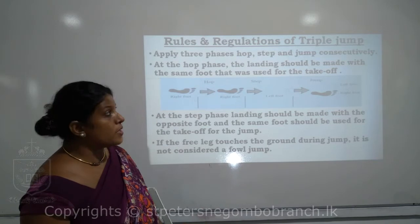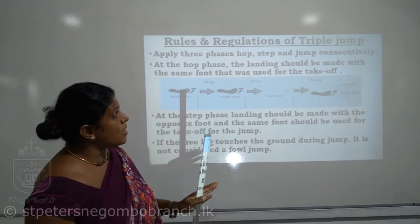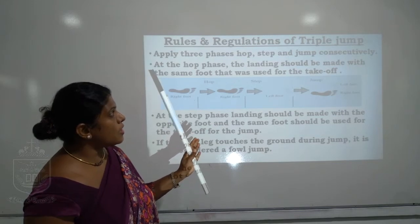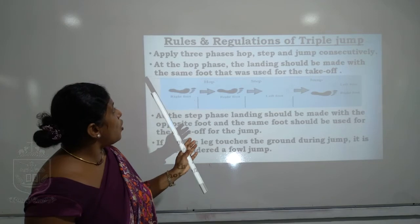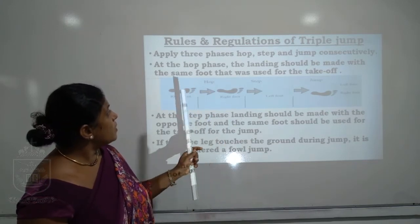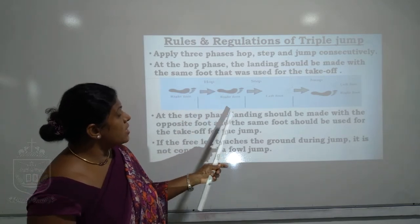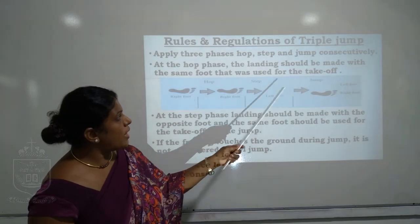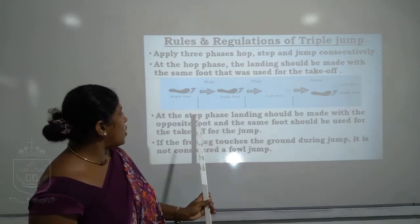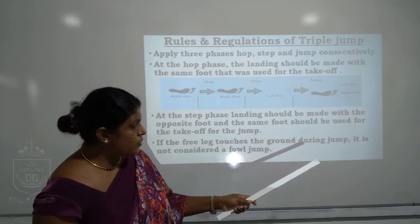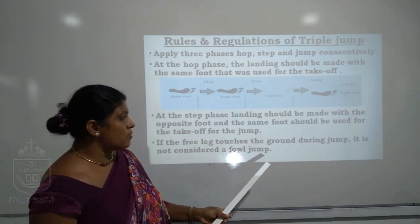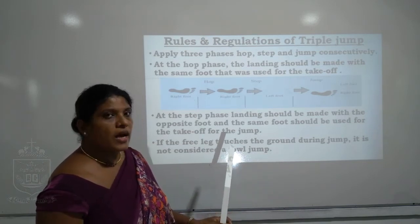Rules and regulations of triple jump: apply the three phases — hop, step, and jump — consecutively. At the hop phase, landing should be made with the same foot that was used for take-off: right, right, then change to left, and jump with both feet. At the step phase, landing should be made with the opposite foot. If the free leg touches the ground during the jump, it is not considered a foul.